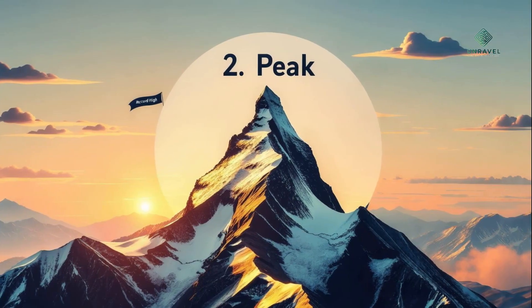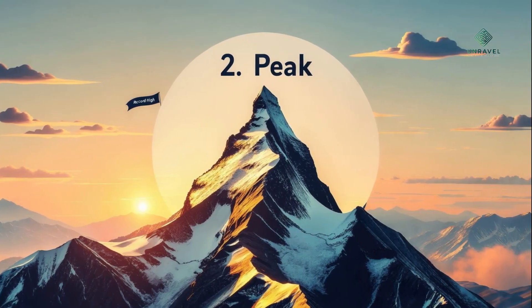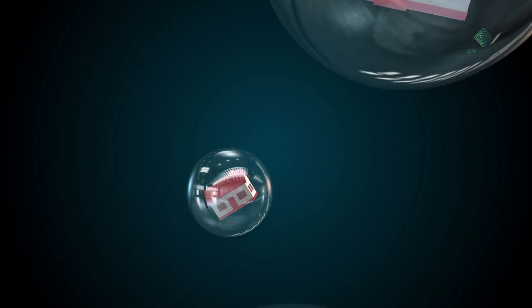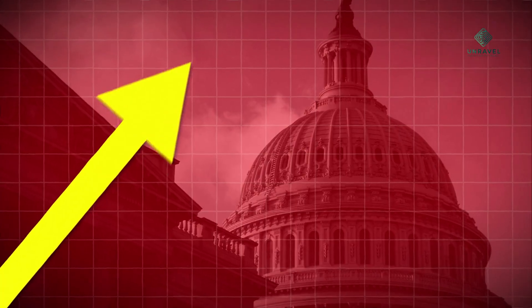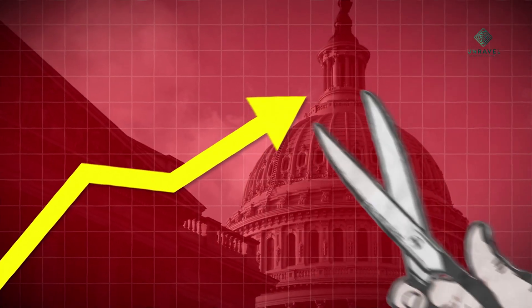Two: peak. The peak is the height of the boom. Spending is high. Production is at full tilt. Unemployment is low. But it's also where warning signs often begin to appear. Asset bubbles may form. Wages might outpace productivity. And central banks, like the U.S. Federal Reserve, might step in to raise interest rates to cool things down.